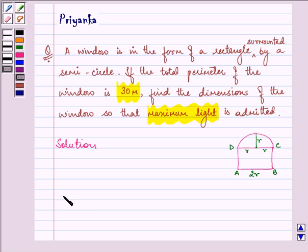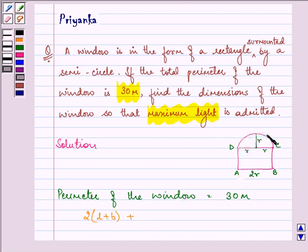First of all, we are given the perimeter of the window as 30 meters. Now, if you carefully observe, this perimeter of this window is perimeter of the rectangle plus the circumference of the semicircle.